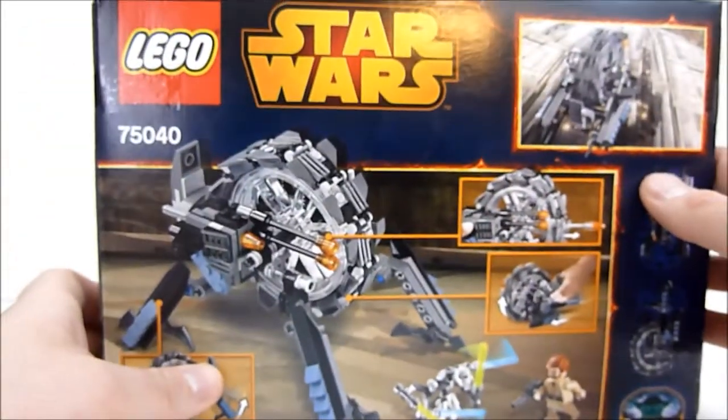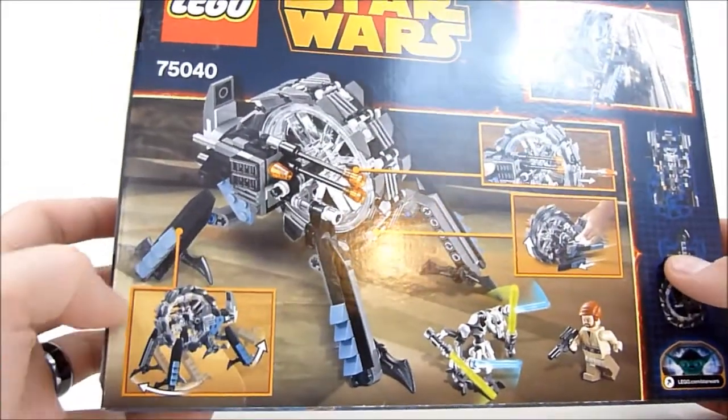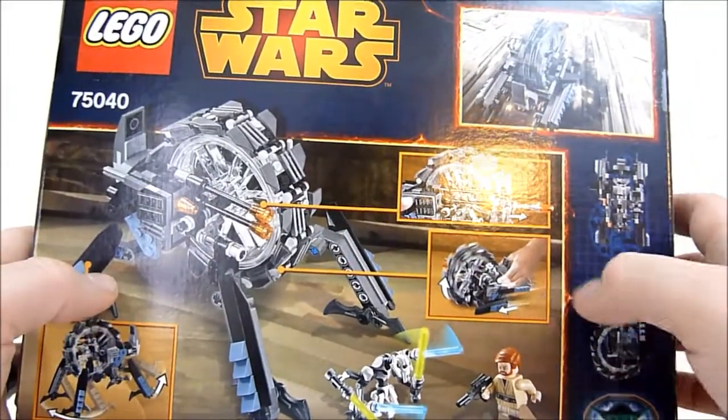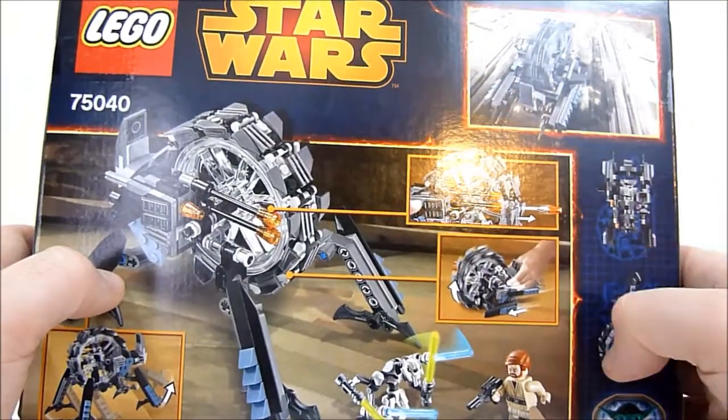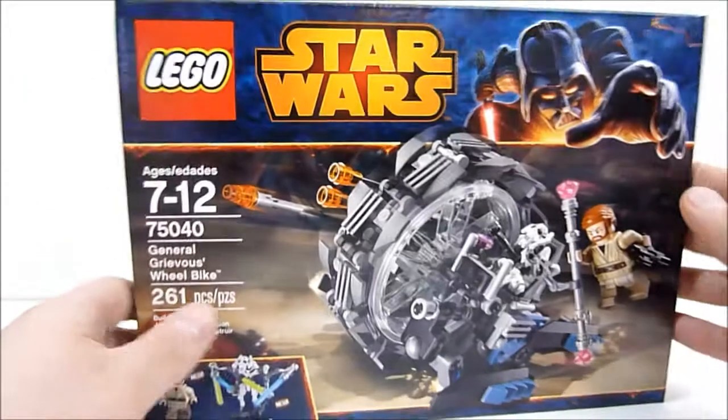And then on the back here, you can see it's got legs that pop out, so it can kind of get around on all fours. And then it folds up and you can kind of push it along. So pretty cool. It's got flick fire missiles, of course. It needs to have flick fire missiles. Can't not have flick fire missiles.